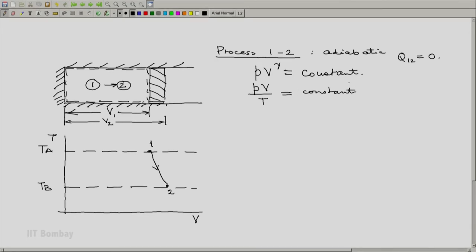Combining these two, if you divide the first equation by the second equation, you will get the consequence: the P will get eliminated. And you will get that for such a process, TV raised to gamma minus 1 is some constant, a third constant. We are not worried about the value of the constant.